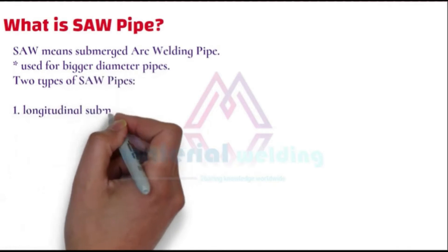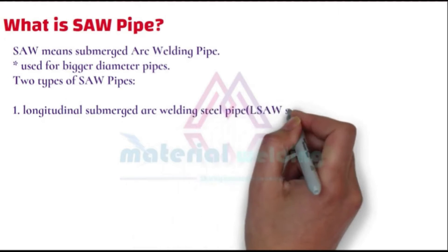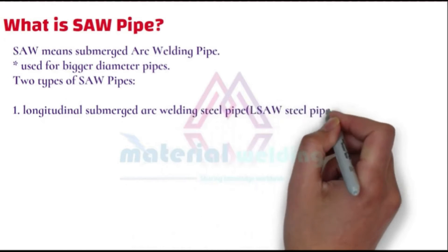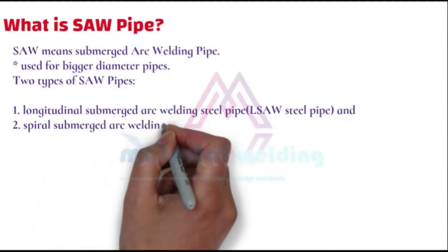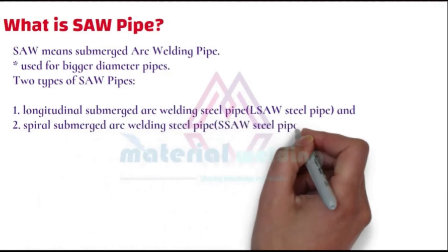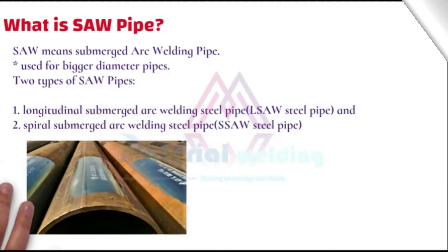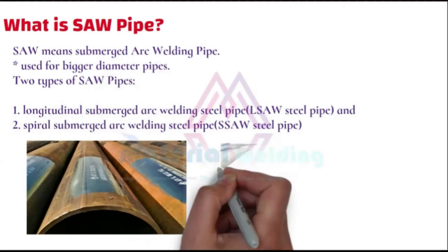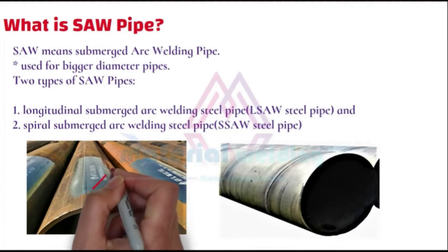SAW pipes have two types: 1. Longitudinally welded submerged arc welded pipe, also called LSAW pipes. 2. Spiral submerged arc welded pipes, also called SSAW pipes. You can identify LSAW pipes with a long seam welded with SAW, while spiral pipes are welded circumferentially.